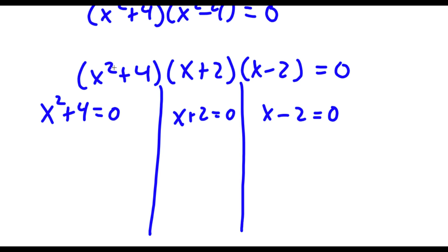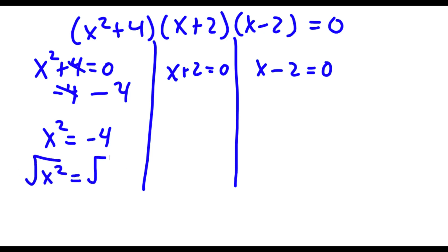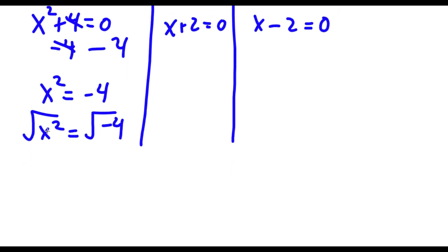For x squared plus 4 equals zero, I'm going to start by subtracting 4 on both sides. These two cancel out and now I'm left with x squared is equal to negative 4. To solve this I'm going to take the square root on both sides. The square root of x squared is simply equal to x, so I have x is equal to the square root of negative 4.